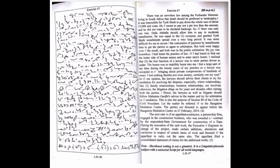In our opinion, the lawyers should advise their clients to try for mediation for resolving disputes, especially where relationships like family relationships and business relationships are involved. Otherwise, the litigation drags on for years and decades, often ruining both parties. Hence, the lawyers as well as litigants should follow Mahatma Gandhi's advice in the matter and try for arbitration or mediation. This is also the purpose of Section 89 of the Code of Civil Procedure. Let the matter be referred to the Bangalore Mediation Center. The parties are directed to appear before the Bangalore Mediation Center on 21 February 2014.